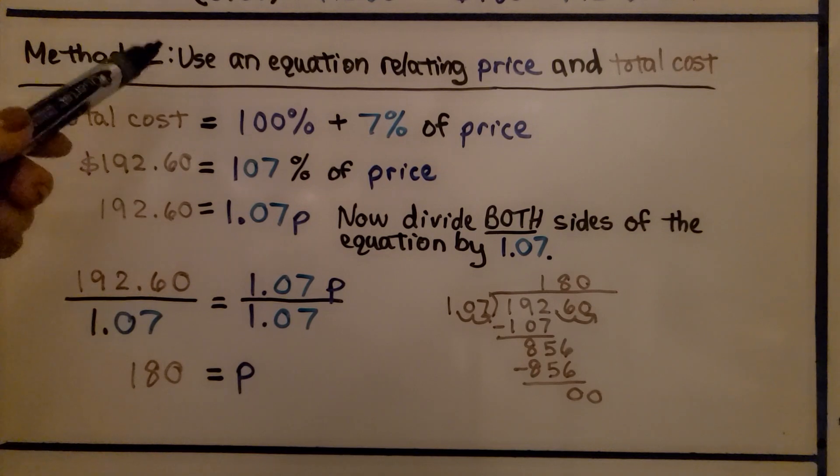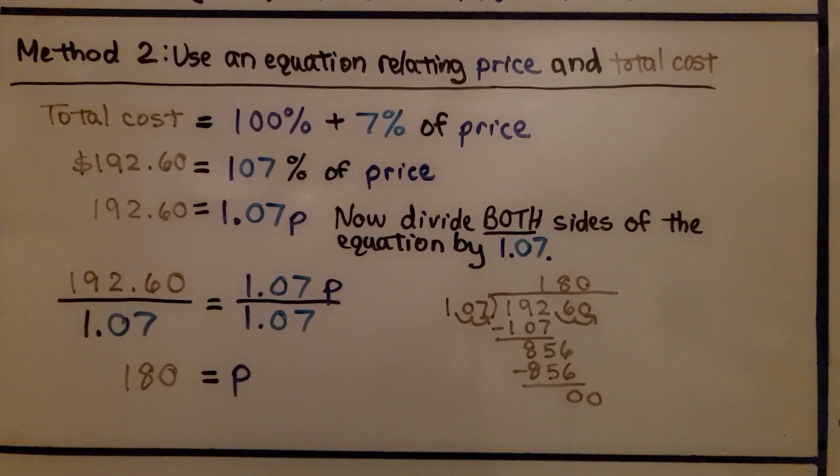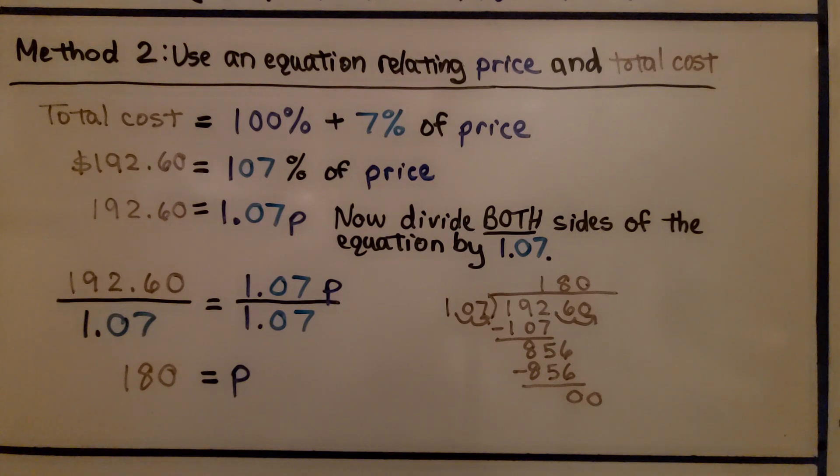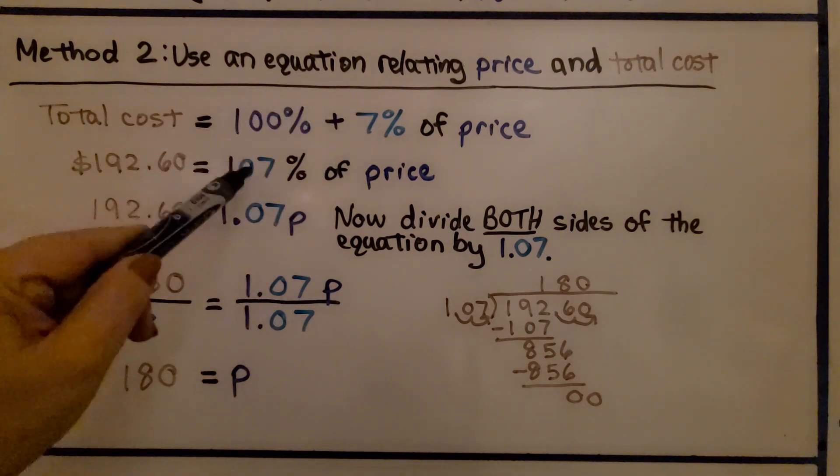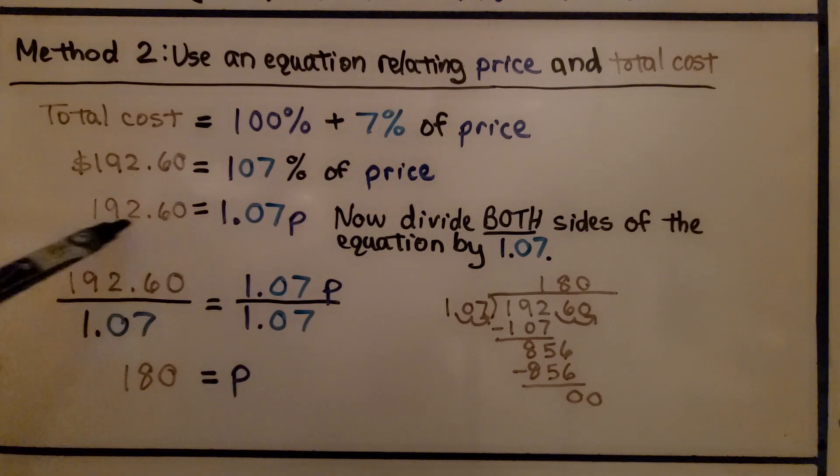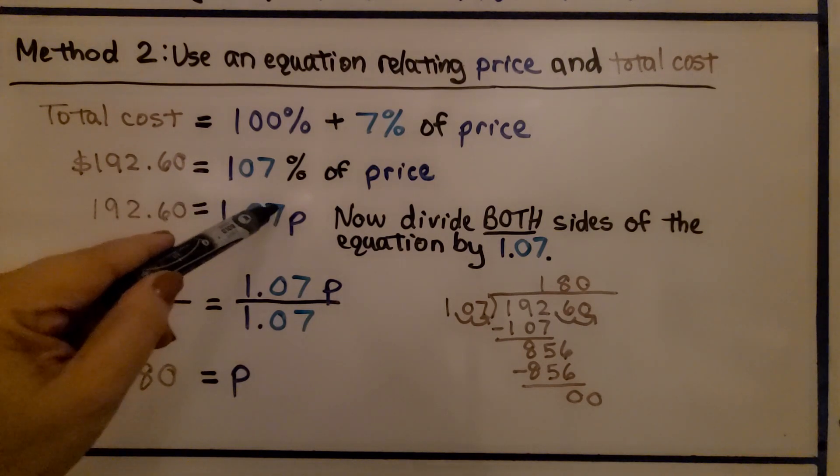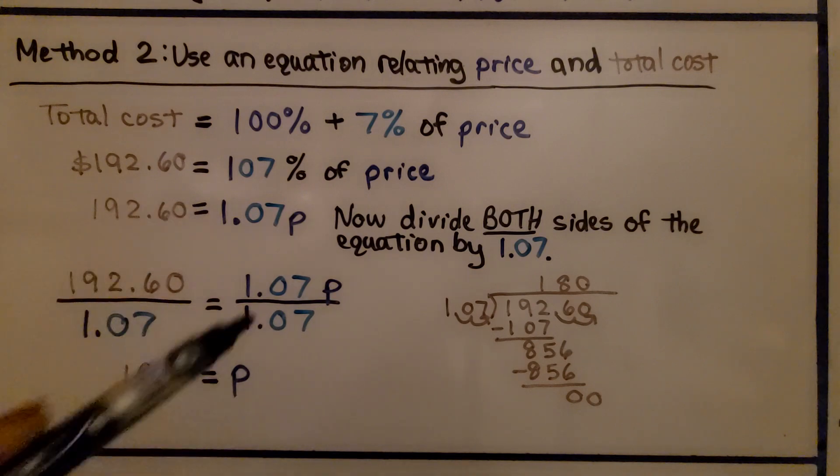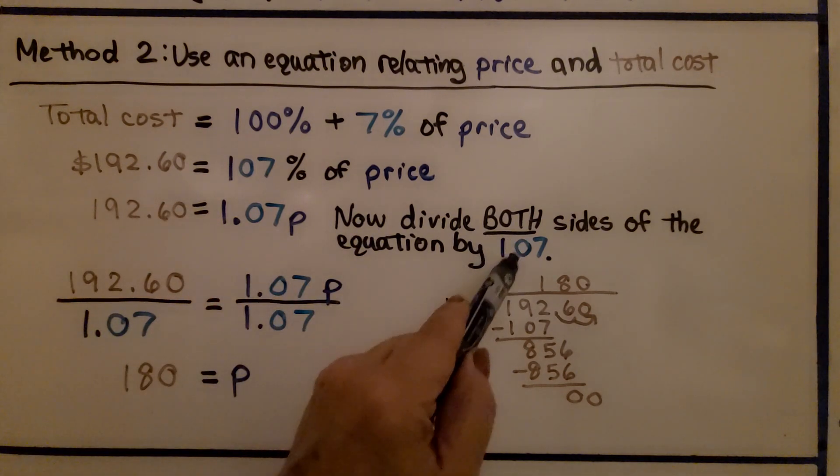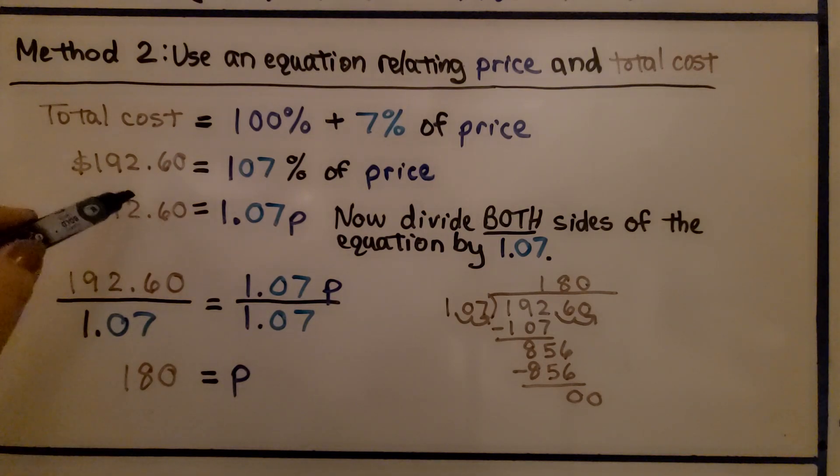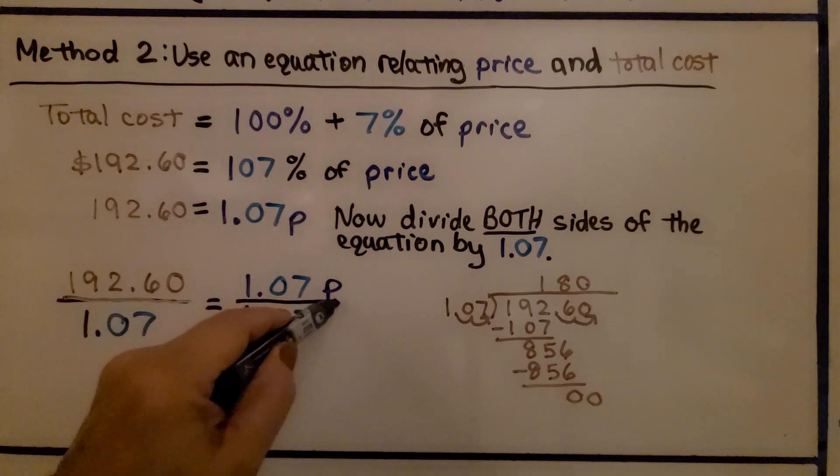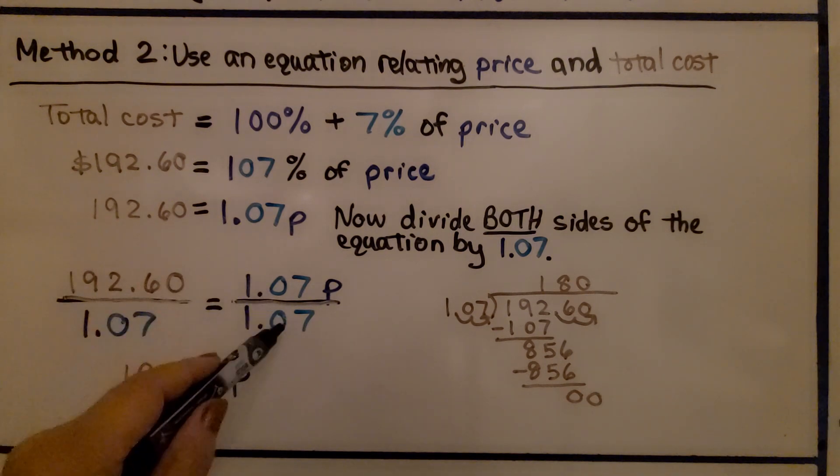So method two, that would be using an equation relating price and total cost. We have our total cost is equal to 100% of the price plus 7% of the price. That means we have 100% plus 7%, that's 107% of the price. And we know our total cost is $192 and 60 cents. We're going to divide both sides of the equation by 1.07. We had $192 and 60 cents is equal to 1.07p. We divide both sides by this 1.07. We do it on this side and we do it on this side.